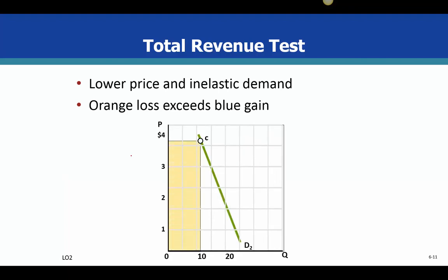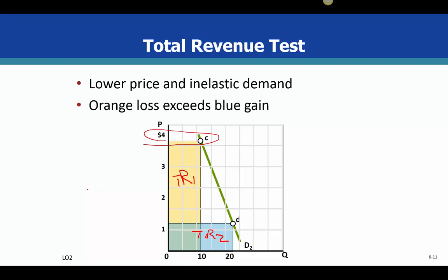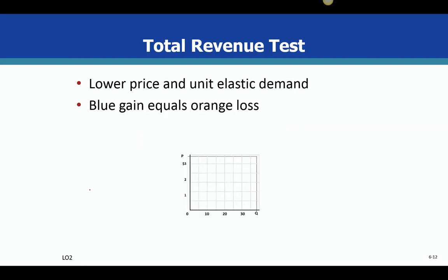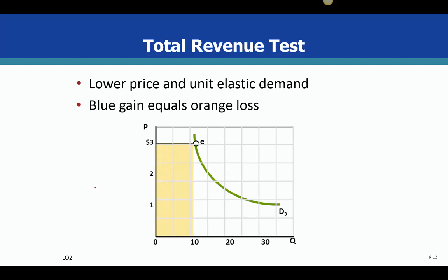For inelastic demand, when price decreases, total revenue also decreases — they move in the same direction. Unit elasticity is where price and total revenue remain the same regardless of the price change. This total revenue test helps us verify the type of elasticity we're dealing with.